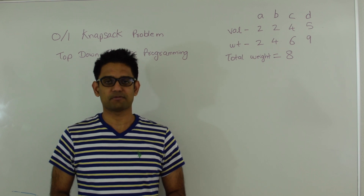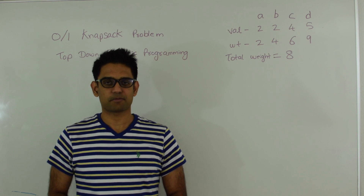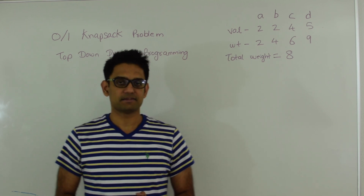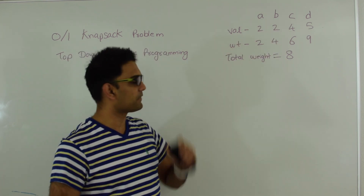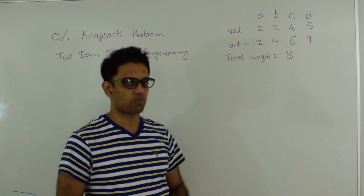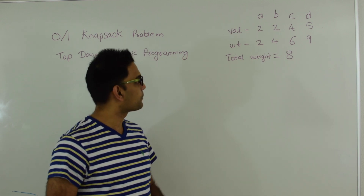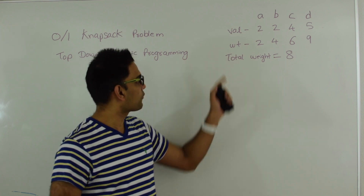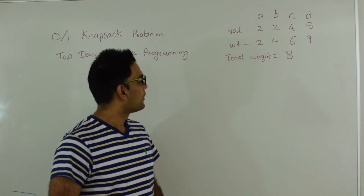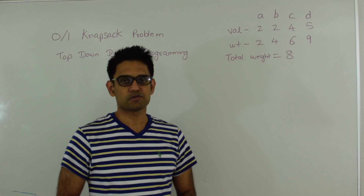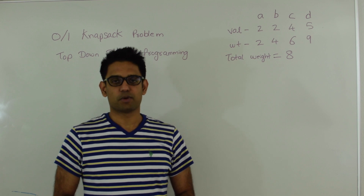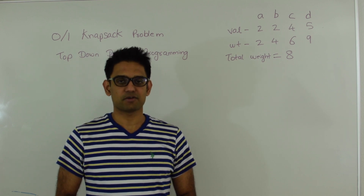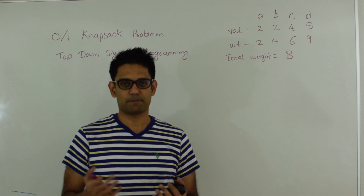In top-down dynamic programming we solve a question recursively and then we apply memoization on overlapping sub-problems where repetition of work is happening. In the 0/1 knapsack problem we have certain items with values and weights, and a total weight capacity. Our aim is to pick items such that the sum of their values is maximum while the sum of their weights is less than or equal to the total weight. Also we have just one quantity of every item. The algorithm works by trying to get the maximum value by either picking the item or not picking the item.